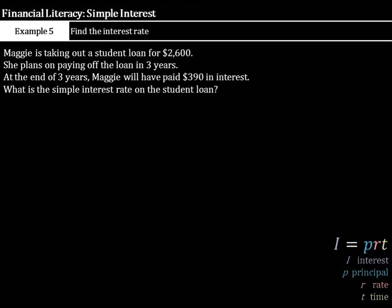So, let's start this as we've started every problem so far by defining our variables I, P, R, and T. We actually know the interest this time. We know the interest is going to be $390. We also know that she took out the principal, which is $2,600. We're actually solving for the rate this time, so that's just going to stay R. And our time is 3 years.